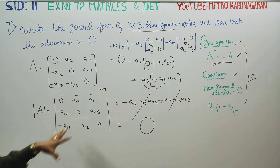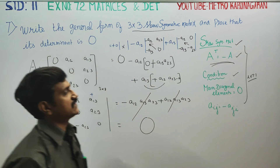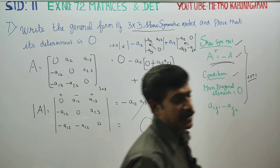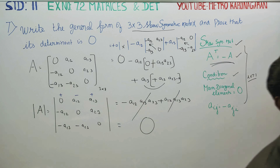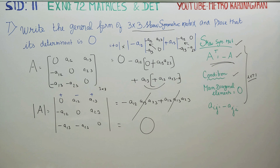So when we expand the skew symmetric matrix, the determinant value comes out to 0. Okay, thank you.